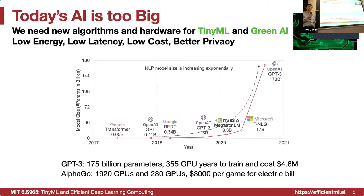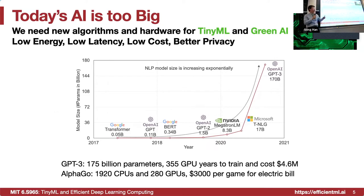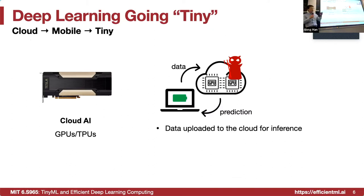What is TinyML? The other direction is big ML — so big that, for example, the OPT model we're recently working on has 170 billion parameters. We cannot even feed it into a single GPU for inference; we need eight GPUs just to run inference for such a large model. So we need TinyML and green AI. TinyML has several advantages.